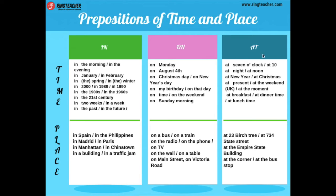Y con 'at' — esta preposición se usa para describir calles específicas o una dirección. At twenty-three Pierce Tree. Para describir una dirección o un lugar en específico: at the Empire State Building, at the corner, at the bus stop.